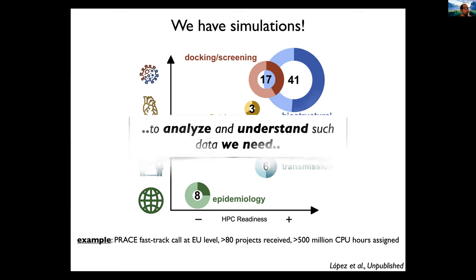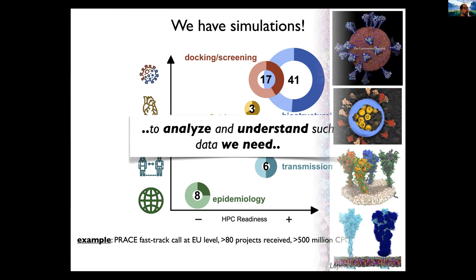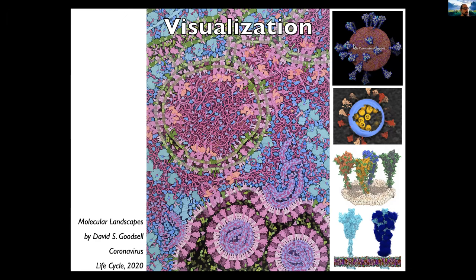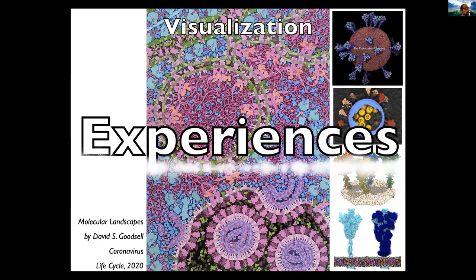The question is, how can we most efficiently analyze and understand this data? My kind of dogma is that for that we need visualization. Here you have a drawing by David Goodsell about the coronavirus life cycle, and a few images from the New York Times article. It takes experts to really process this raw data and get it into a visual form useful for communicating ideas and teaching others. I would call this not just visualization but actually visualization experiences.